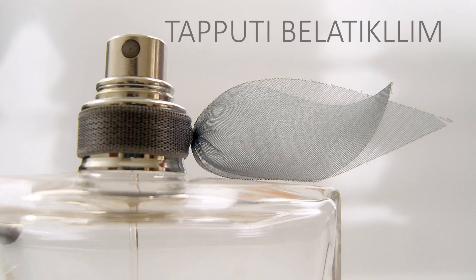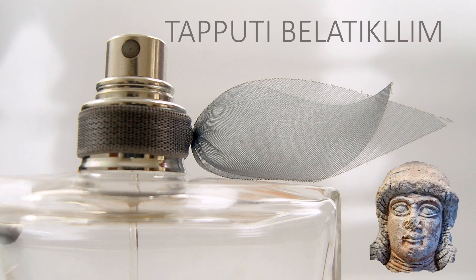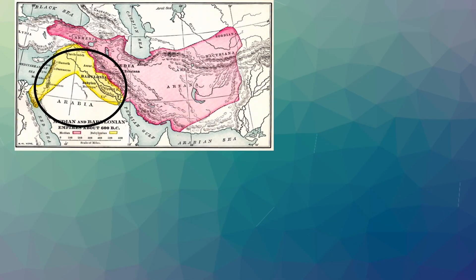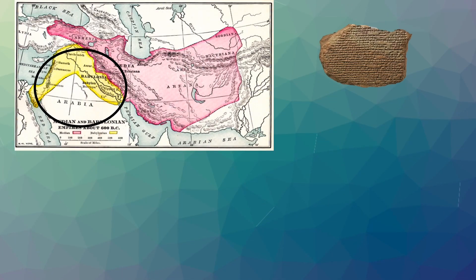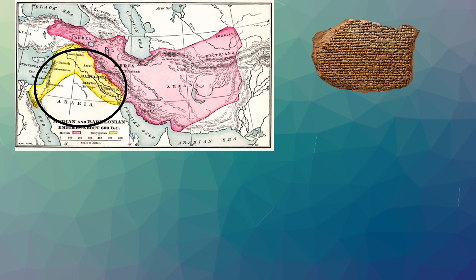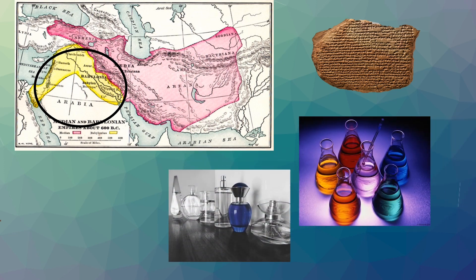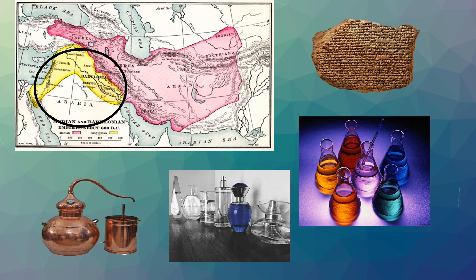If you are interested in chemistry, then this name should sound familiar. On a Babylonian cuneiform tablet dating back over 3000 years, we have the first mention of a chemist, a perfumer, and the first recorded use of a still in all of human history.